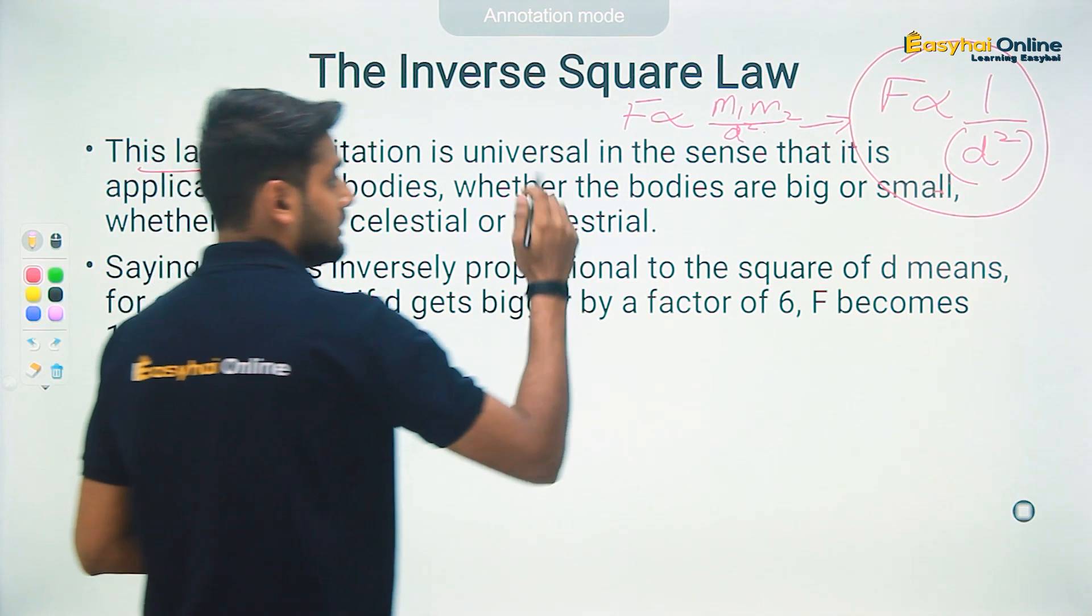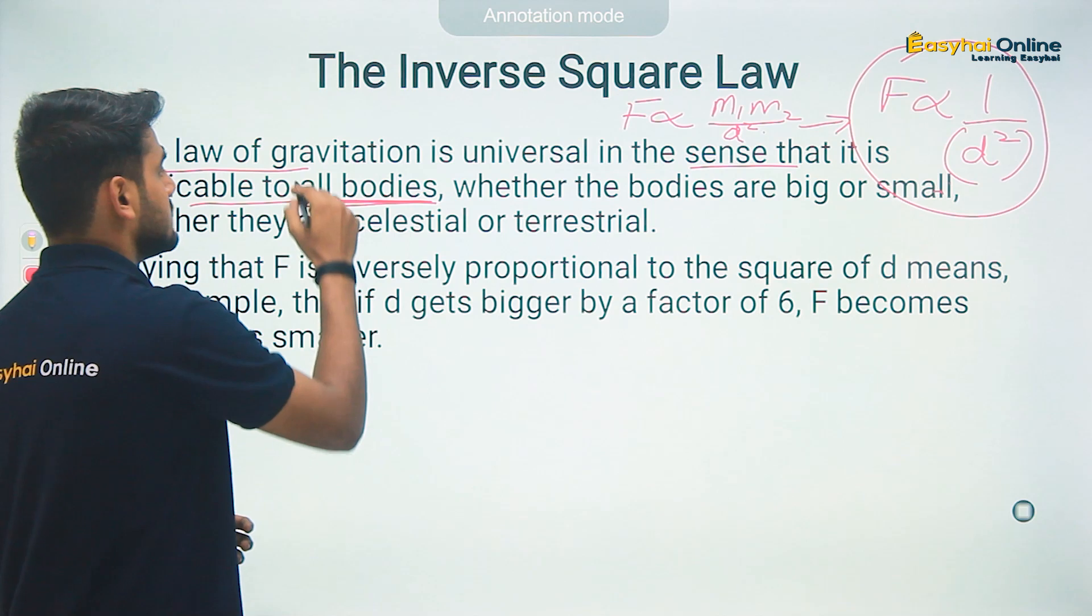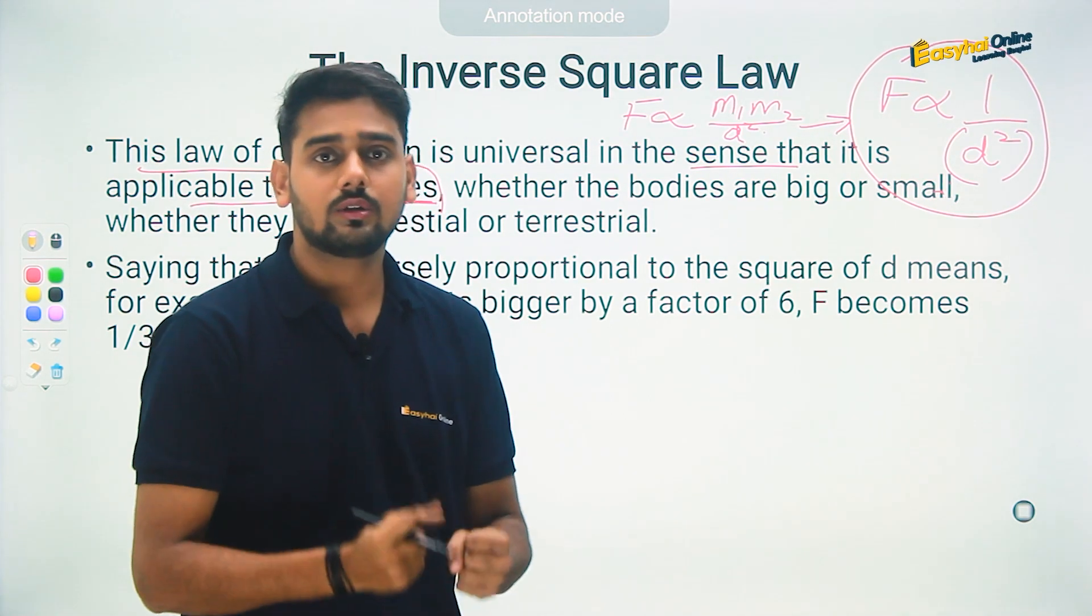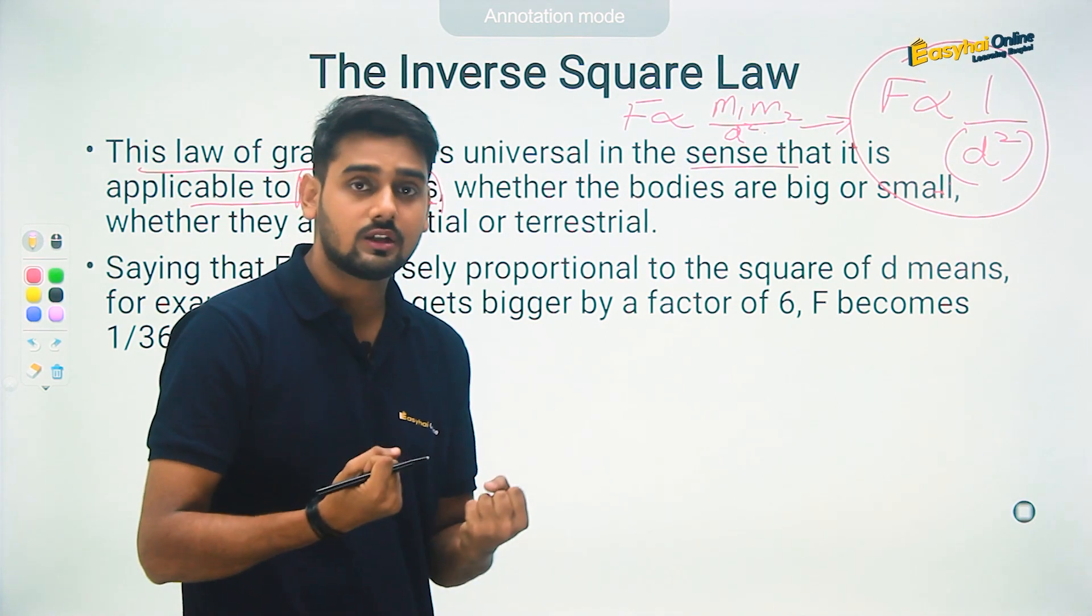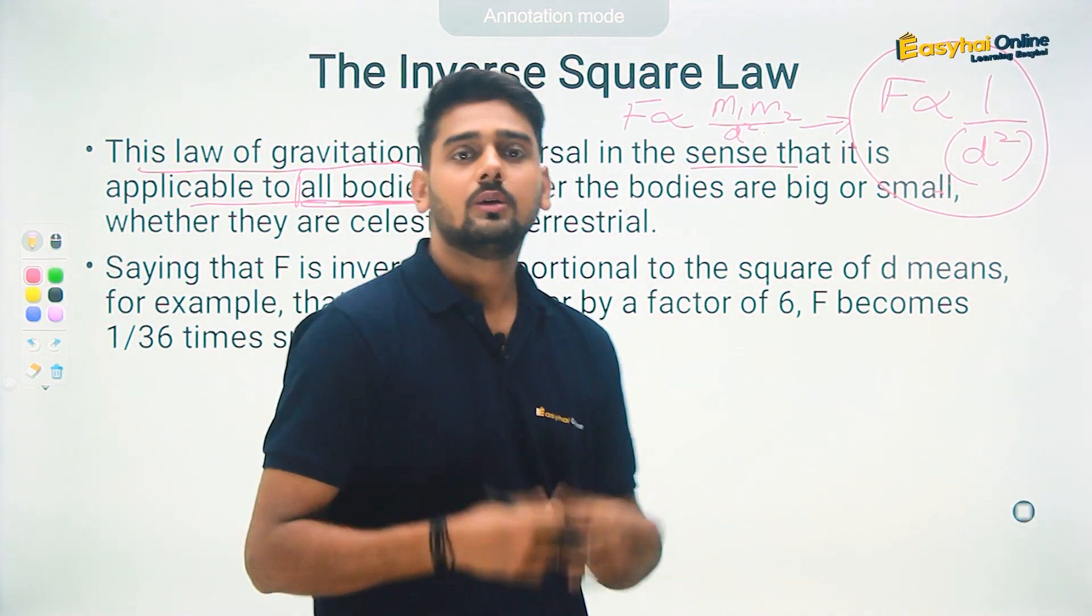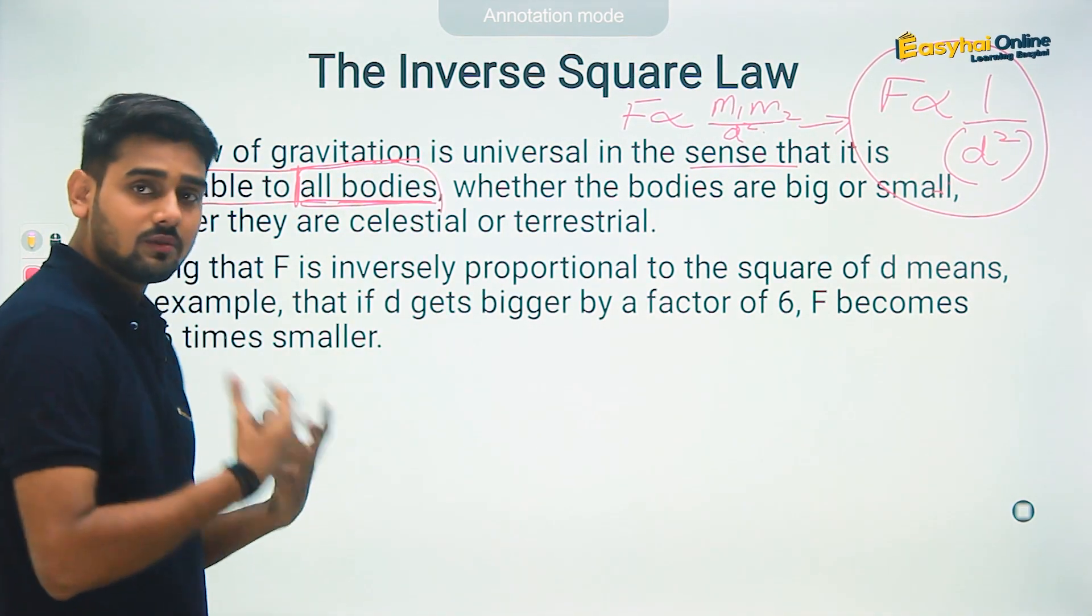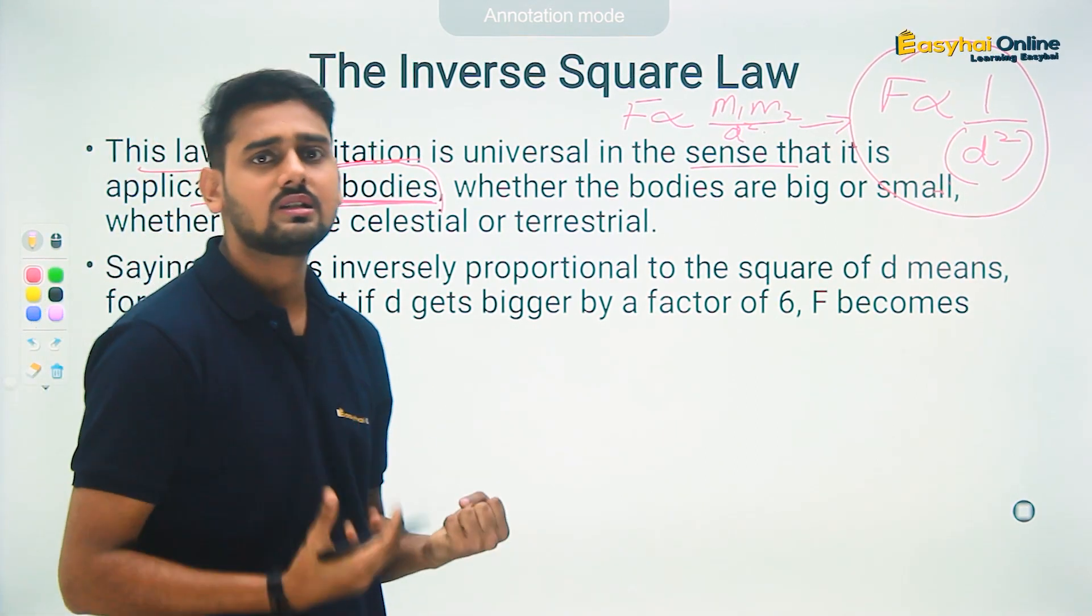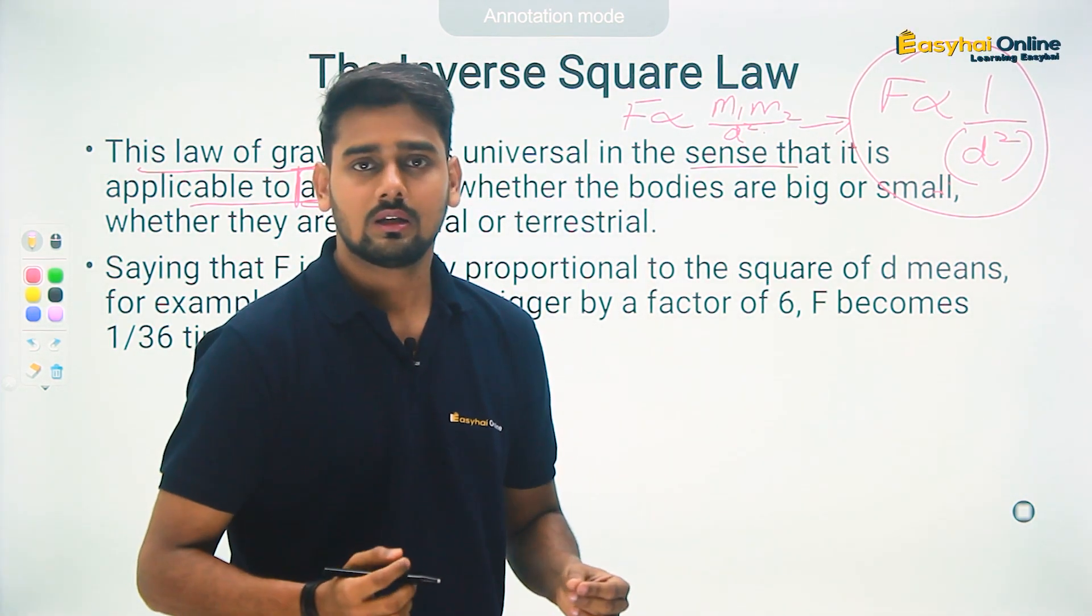Another important thing is this law of gravitation is universal in the sense that it is applicable to all bodies. This is very important. Earlier, even in the times of Isaac Newton before him, it was majorly understood that gravitation or gravitational force exists only between the planets. But later on, Newton came and he did something incredible and very different which changed the whole idea - that this gravitational force is not only existing between planets but it is existing in all objects.